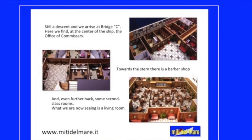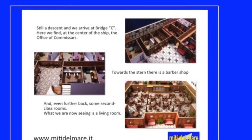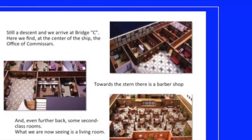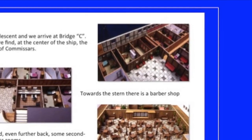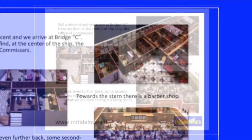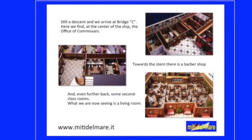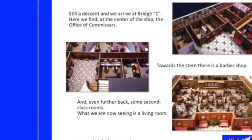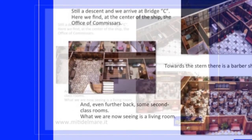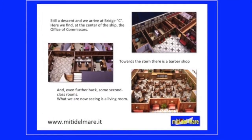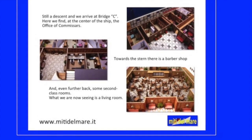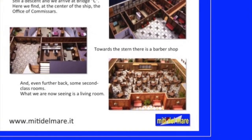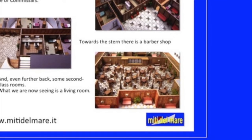Still a descent and we arrive at Bridge C. Here we find, at the center of the ship, the office of the purser. Towards the stern there is a barber shop, and even further back, some second class rooms. What we are now seeing is a second class living room.